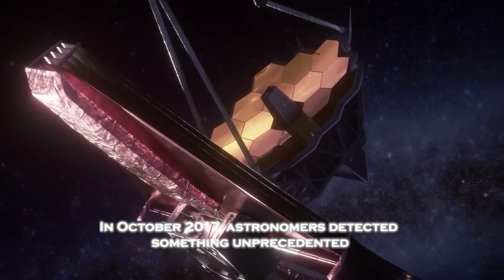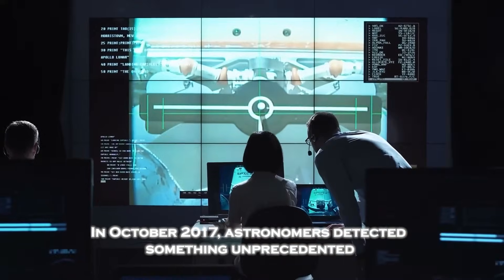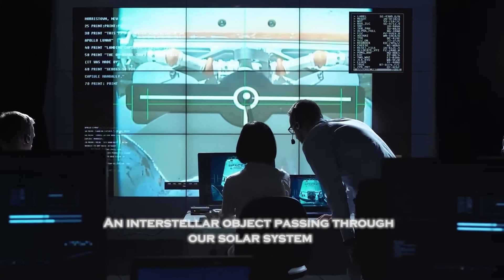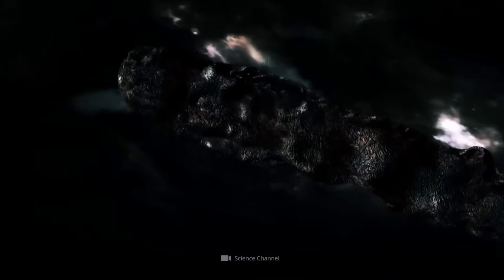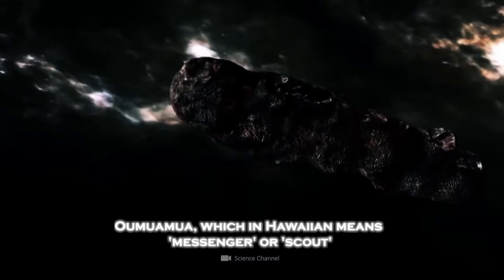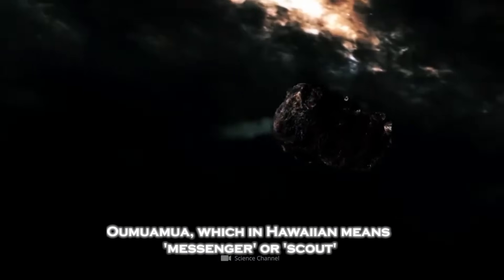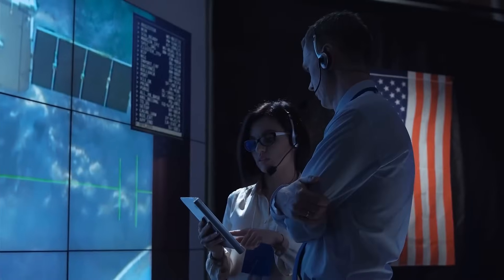In October 2017, astronomers detected something unprecedented: an interstellar object passing through our solar system. They named it Oumuamua, which in Hawaiian means messenger or scout. Since then, it has been the subject of intense scientific debate and speculation.